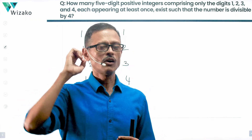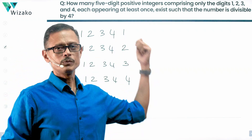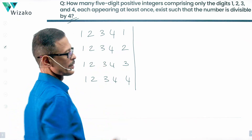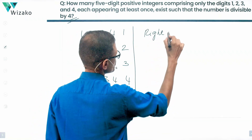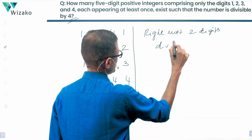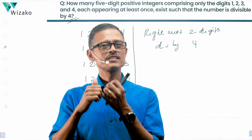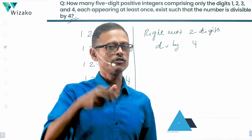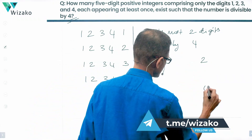Essentially, we have 5-digit numbers. All of these digits should appear at least once, so we've made them appear once and we need one more digit. That one more digit could be either 1, 2, 3, or 4. Now we'll come to the second part: the number should be divisible by 4. The test of divisibility by 4 is that the rightmost 2 digits should be divisible by 4. Any number divisible by 4 will be divisible by 2, which means it's an even number. Of these digits 1, 2, 3, 4, the unit digit can only be a 2 or a 4.